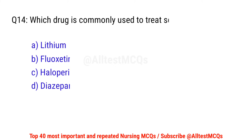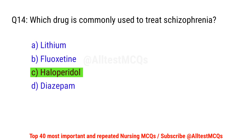Question No. 14: Which drug is commonly used to treat schizophrenia? The right option is C: Haloperidol.